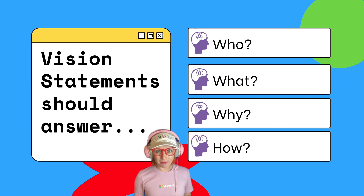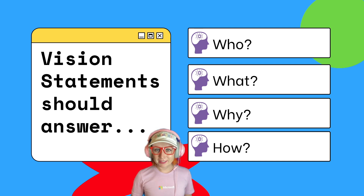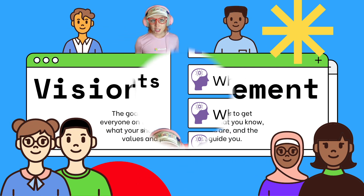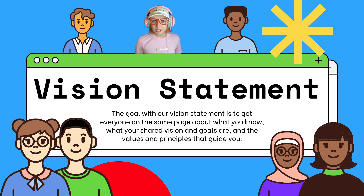A good vision statement answers the questions: who are we? What are we building? Why are we doing this? And how will we accomplish it? Your vision statement should be agreed on by all teammates and it takes time. Make sure that everyone's voice on your team is heard.